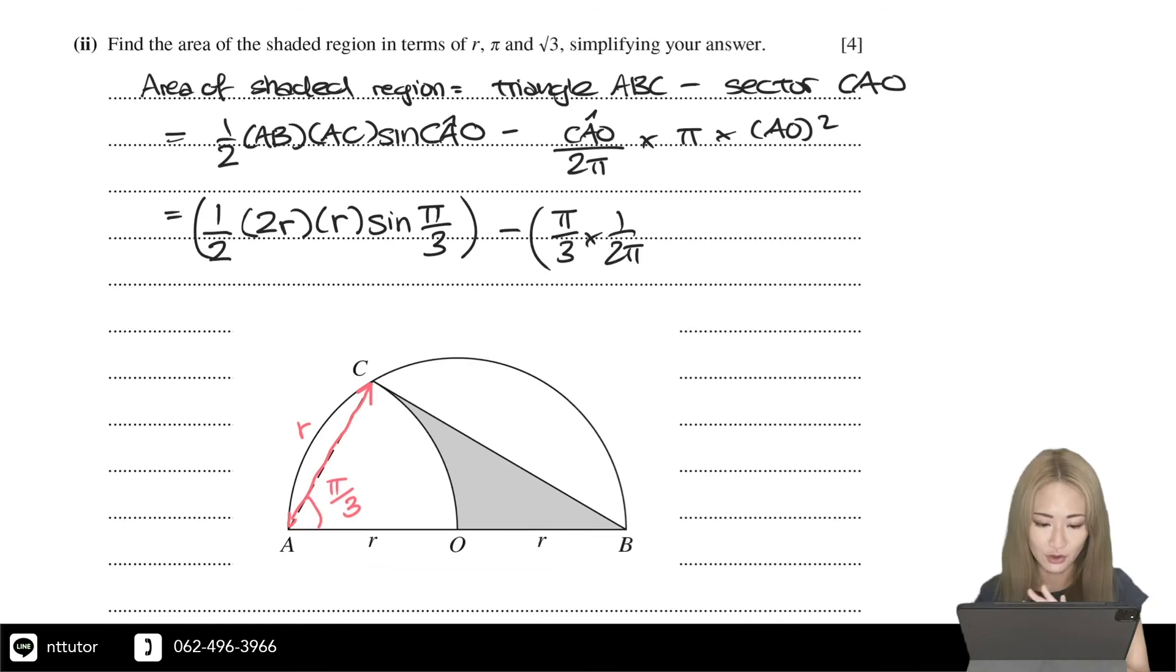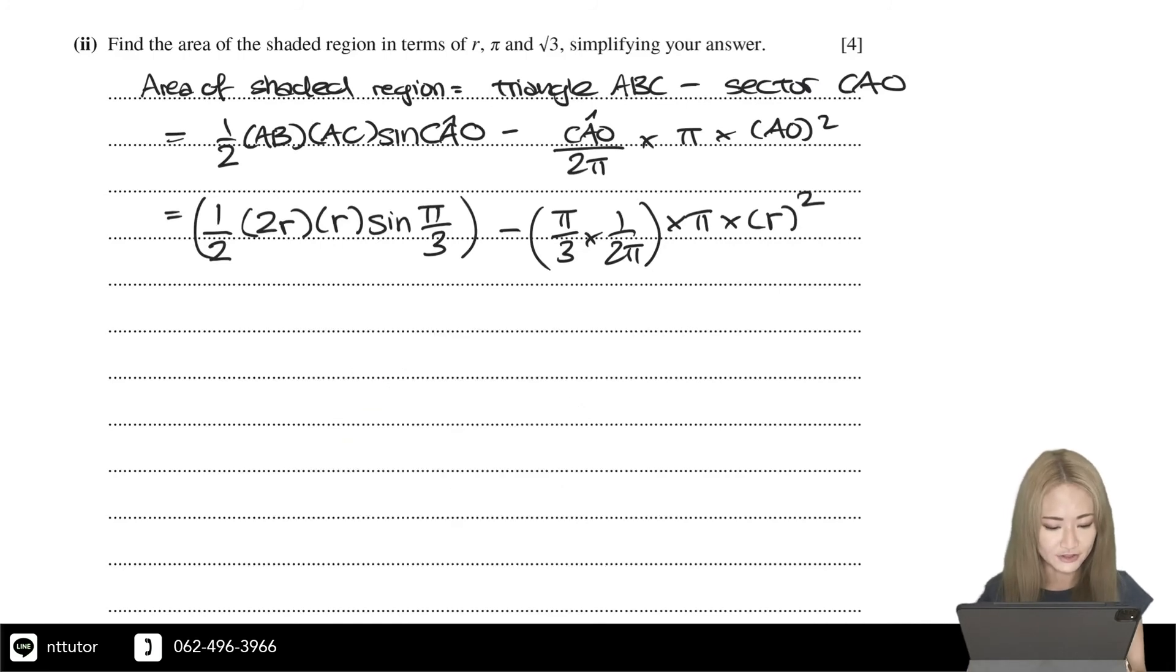angle CAO is equal to π over 3, and AO is equal to R. So if we substitute that all in, and then we can simplify the expression. So sine π over 3 is root 3 over 2. So the first term simplifies to R squared root 3 over 2.